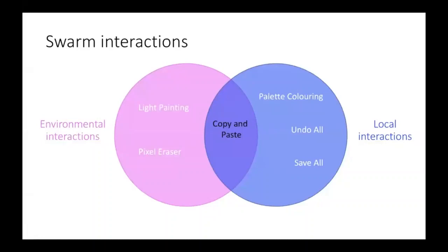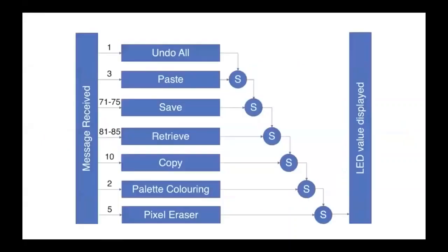When the human keeps their hand over the robots for five seconds, the robots enter copy mode and broadcast a message to their neighbors: if you detect a drop in ambient light, that means the human has moved their hand over to you — show this LED color. That's how the pixel colors move as the hand moves. The robots use both local and environmental interactions to figure out where the hand is. Because multiple humans could be interacting at once, any one robot could simultaneously be hearing the undo all signal, a brush signal, and sensing a drop in ambient light.